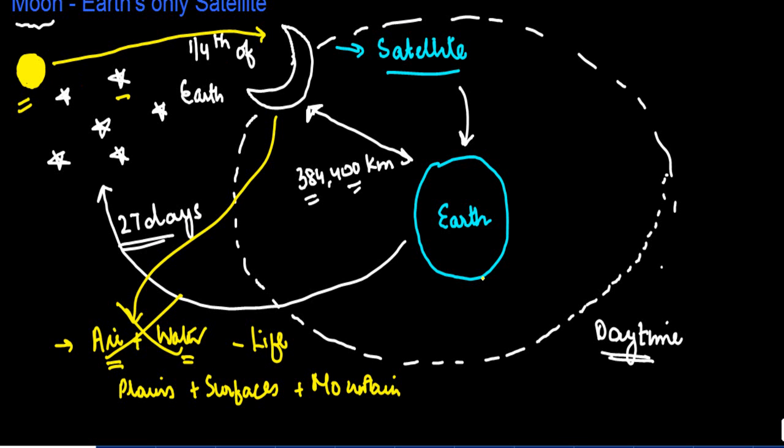Now there is another concept in terms of the shapes of moon. There is something which is called a full moon and a new moon. In case of full moon, what happens is that you are able to see the entire moon, so it's something like this. This happens once a month. You have a full moon day.